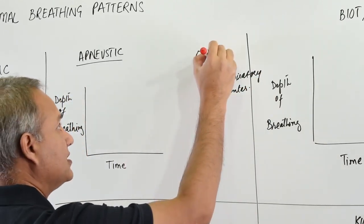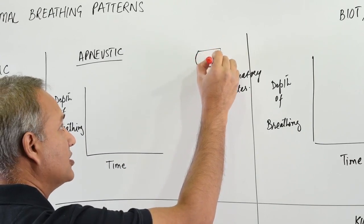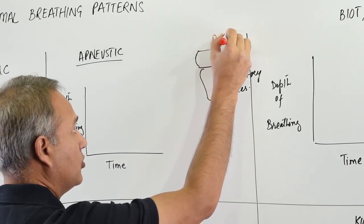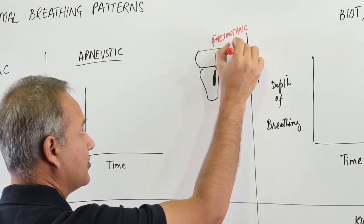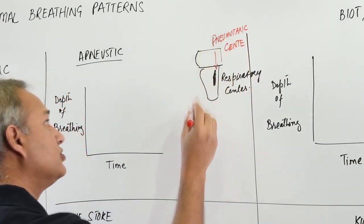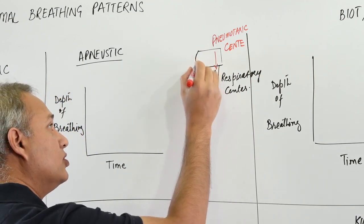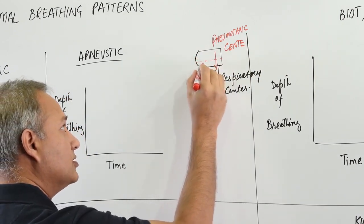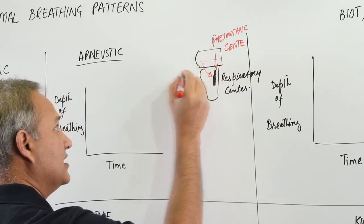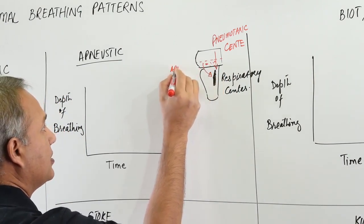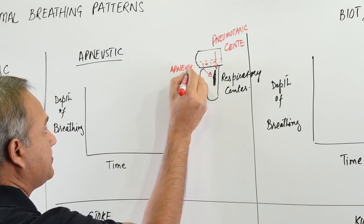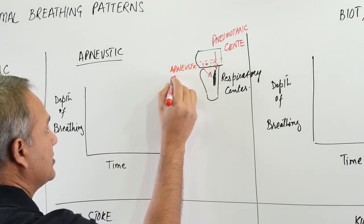The respiratory center receives impulses from the pneumotoxic center in the pons, and it also receives impulses from the lower pons apneustic center. So there are centers here - the apneustic center.